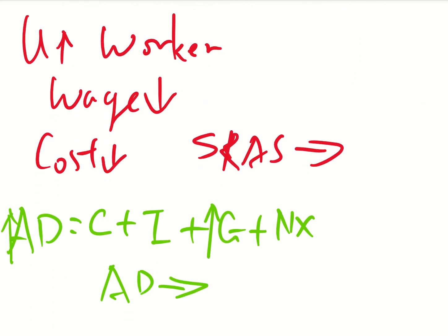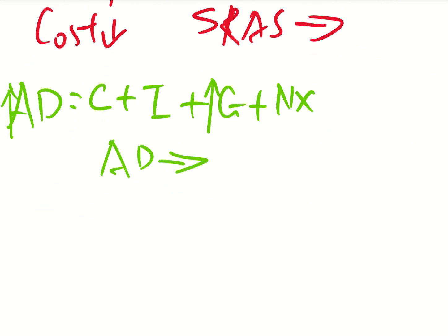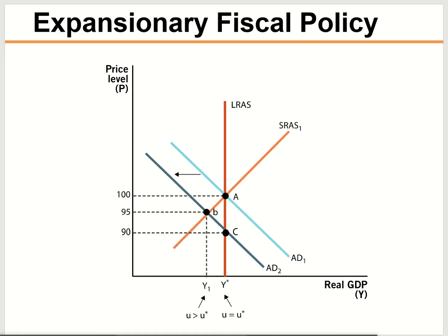That's called expansionary fiscal policy, which means it will expand the economy, stimulate the economy, and make the economy better. Expansionary fiscal policy will push the AD curve back to where it was before. So before the economy self-adjusts from point A to point B and then back to point C, we can push the economy back to point A. That's the idea of expansionary fiscal policy.